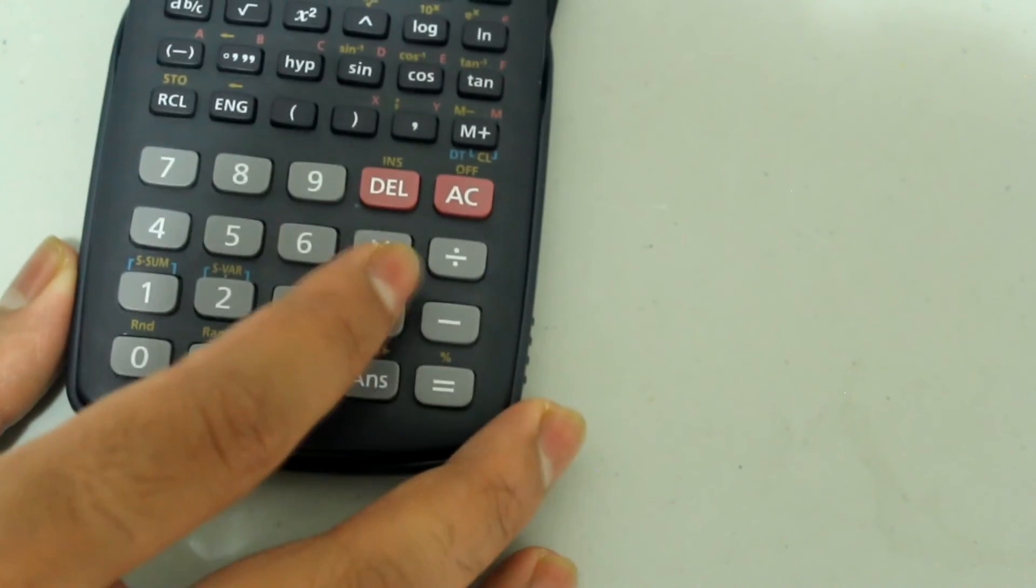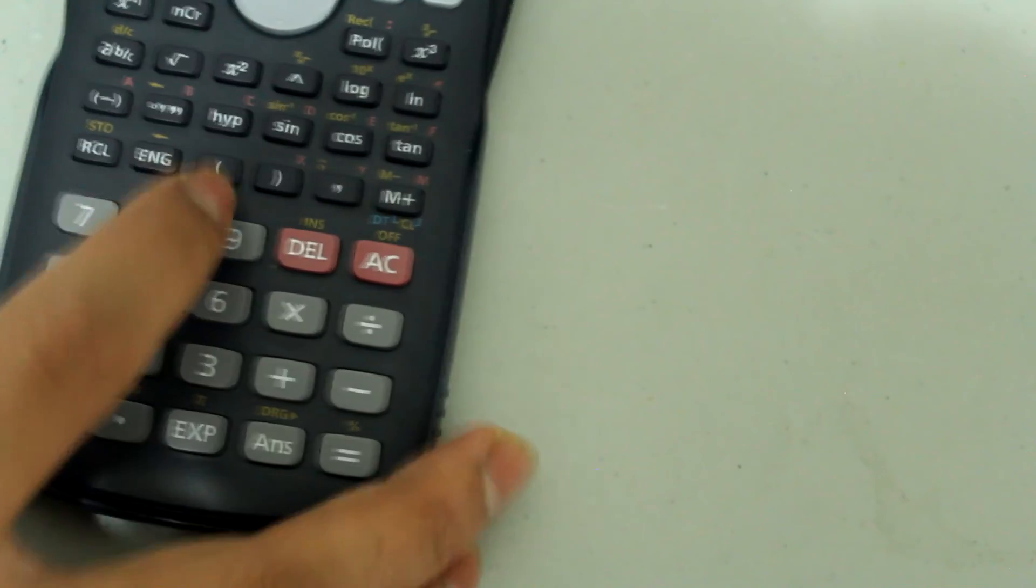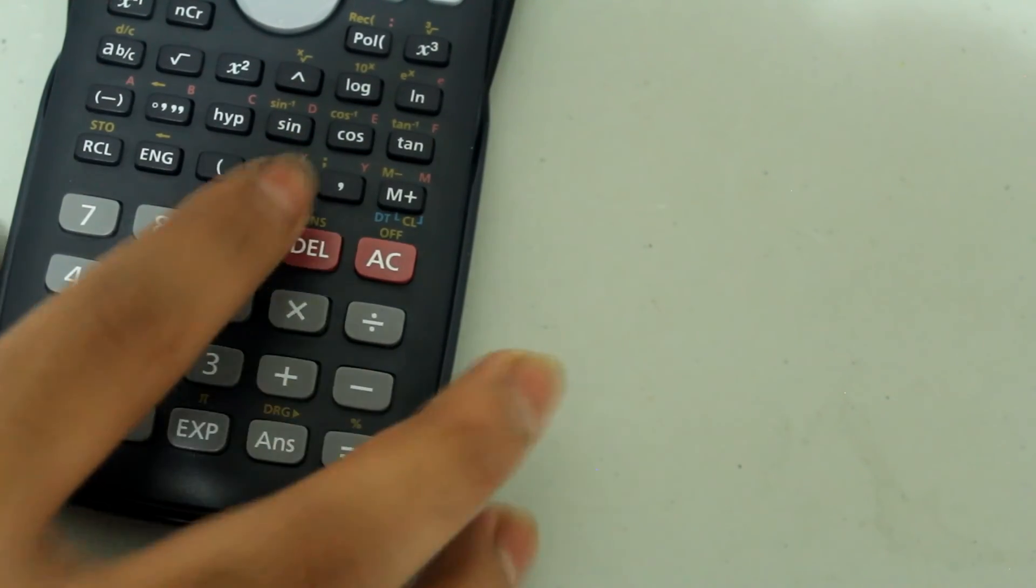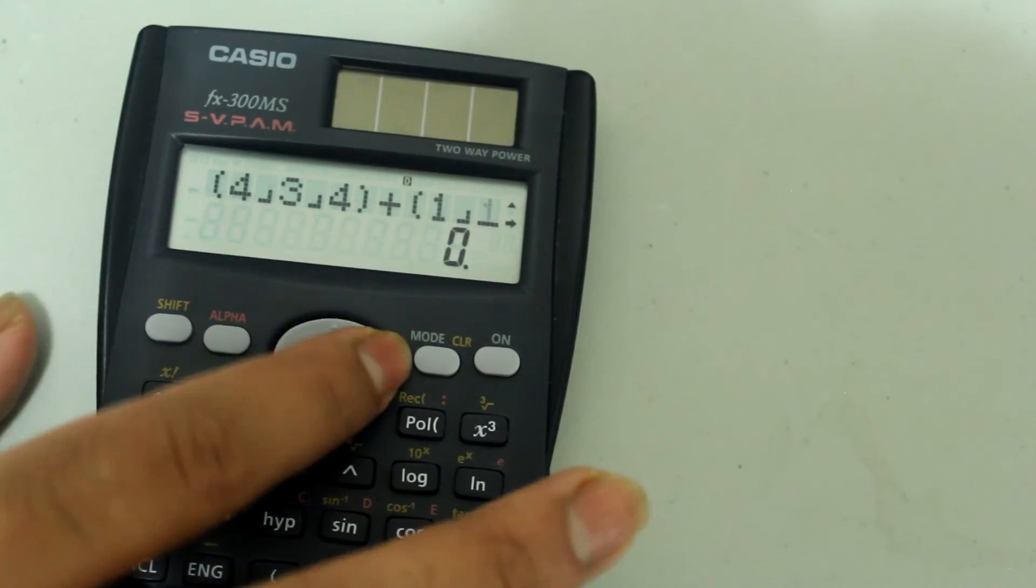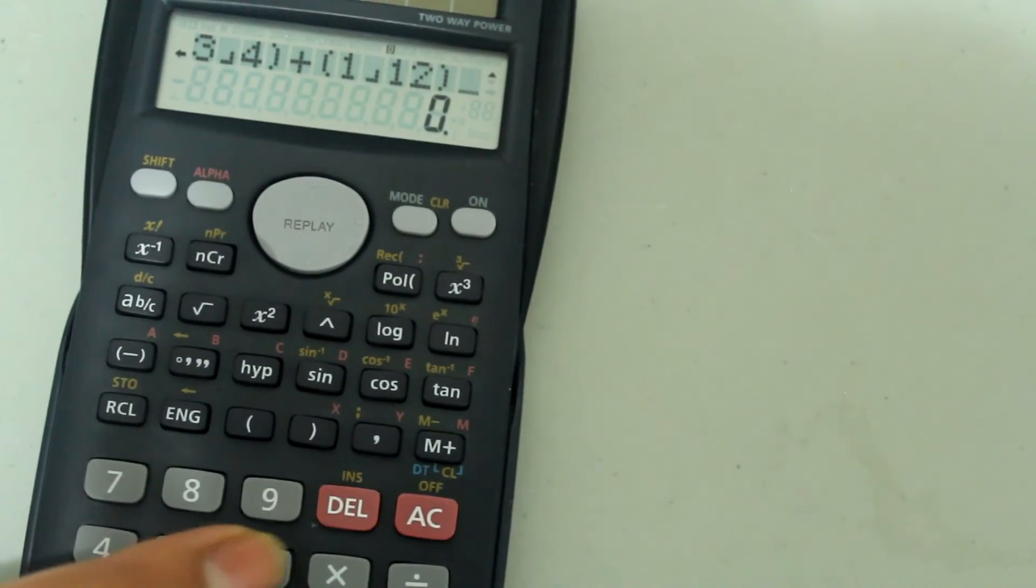and now we're just going to add, and then open parenthesis, 1, fraction bar, 12, close the parenthesis, and notice I have 4 and 3 fourths plus 1 over 12. And if I press equals,